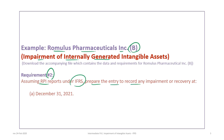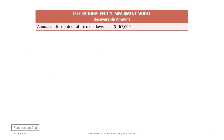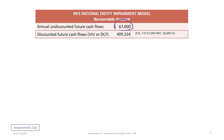Requirement 2 for this problem will require us to assume that RPI reports under IFRS, and we're to prepare the journal entry to record any impairment or recovery at December 31st, 2021. The first thing we need to do is determine the recoverable amount under the IFRS rational entity impairment model. From the data, the annual undiscounted future cash flows are $67,000. We will take those and determine the discounted future cash flows, also known as DCF, or value in use.